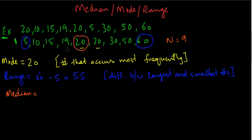This is the fifth number. You have 4 numbers on the left of this and 4 numbers on the right. So 20 is the middle number. Median is simply 20. So median is the middle number.